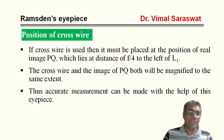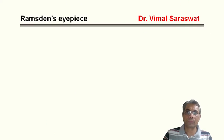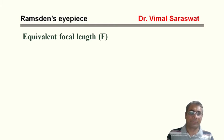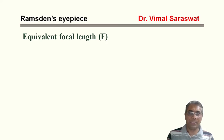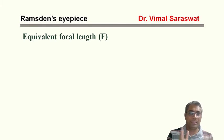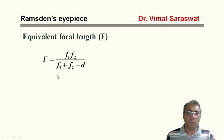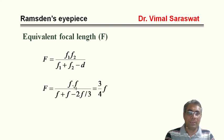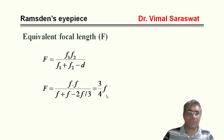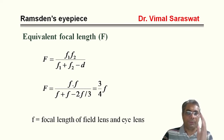Thus accurate measurement can be made with the help of Ramsden eyepiece. For the equivalent focal length F: if two lenses having focal lengths f1 and f2 are placed at a distance d, then 1/F = 1/f1 + 1/f2 − d/(f1·f2), giving F = f1·f2/(f1 + f2 − d). In Ramsden eyepiece, f1 = f, f2 = f and d = 2/3 f, so F = f·f/(f + f − 2/3 f) = 3f/4. Here f is the focal length of the field lens and eye lens.